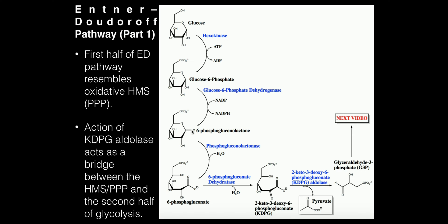This ester is going to be hydrolyzed by phosphogluconolactonase, which uses water to hydrolyze this ester bond, and we ultimately get the molecule 6-phosphogluconate.